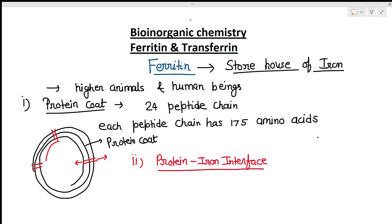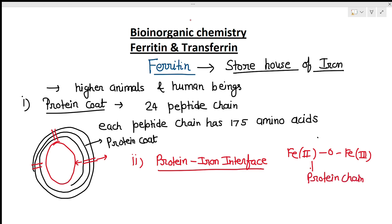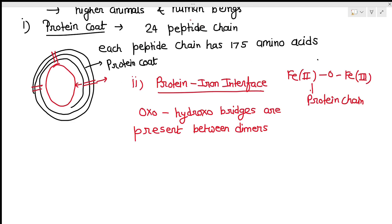The second part is called the protein iron interface. This is made up of iron and protein. Iron is present here as Fe²⁺/Fe³⁺ dimers, and these dimers are attached to the protein chains. These dimers are also attached to each other with the help of oxo or hydroxo bridges.